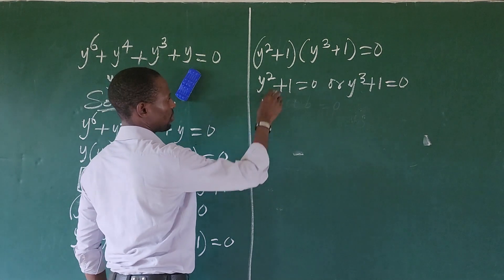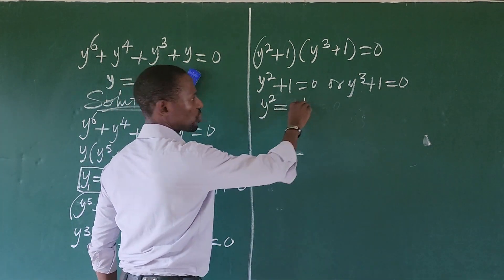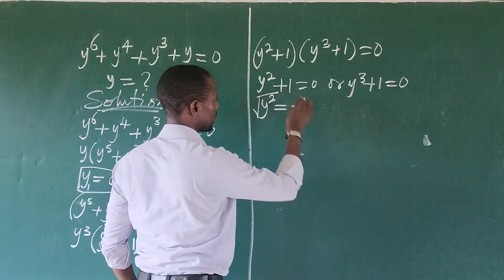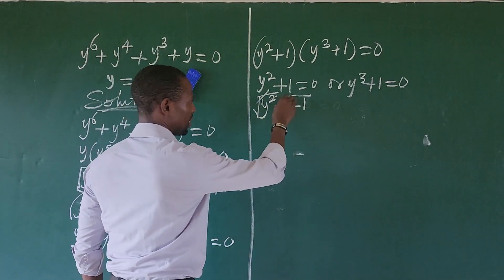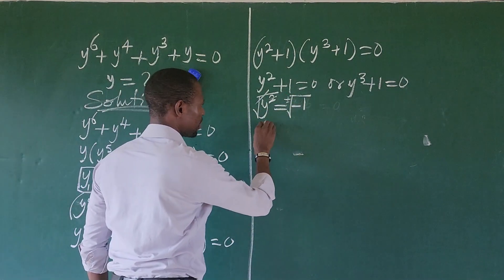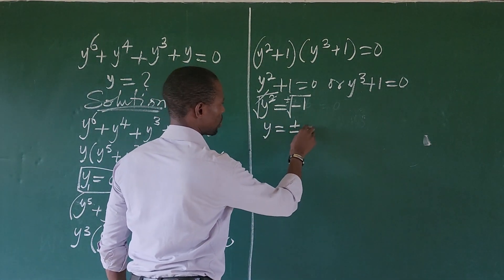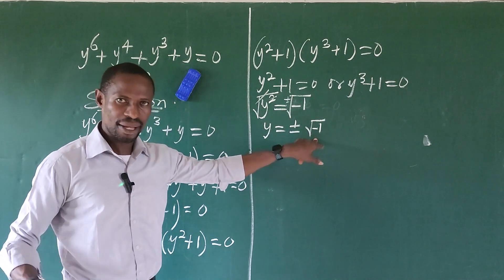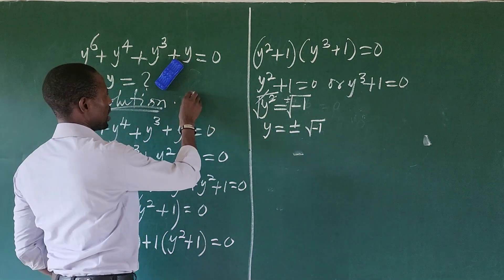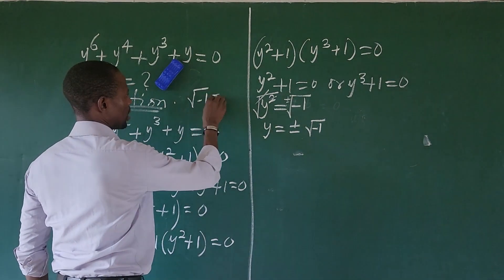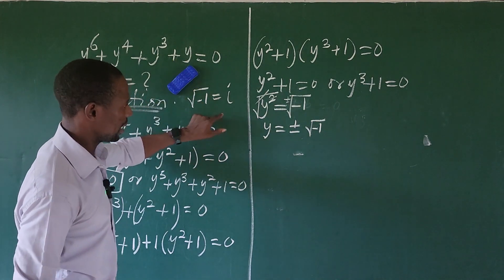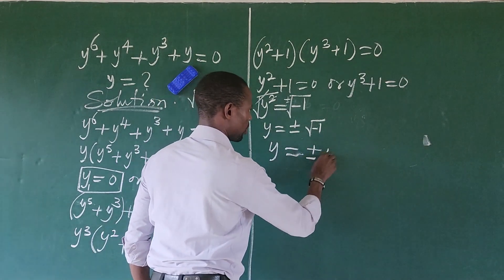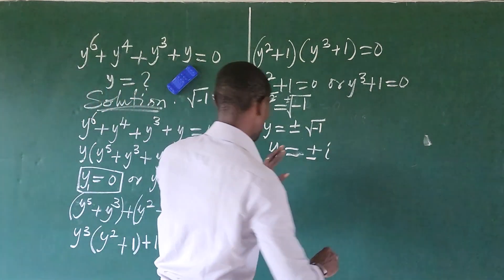From y² + 1 = 0, we send the 1 to the other side to give us y² = −1. Taking the square root of both sides, and introducing plus-minus, we have y = ±√(−1). Remember, the square root of −1 is equal to iota (i). So y = ±i. So we have gotten two roots: y₂ = +i and y₃ = −i.